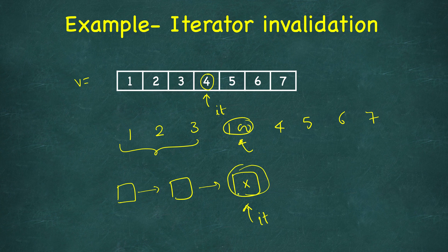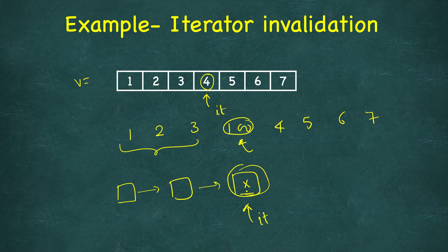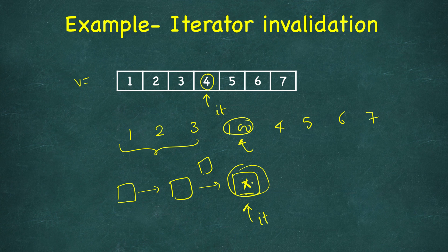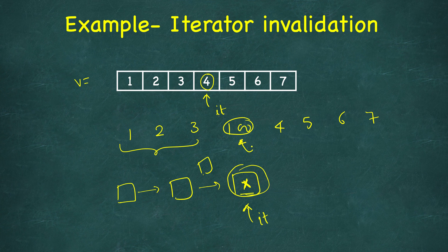Because it's actually pointing to the object location, these are not contiguous, and it's actually pointing to the actual location of that element. So that is not changed, we have just inserted some new node in between. So in that case it may not be invalidated, it will not be invalidated, depending on the container.